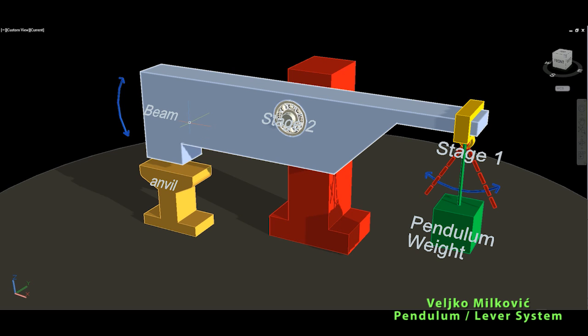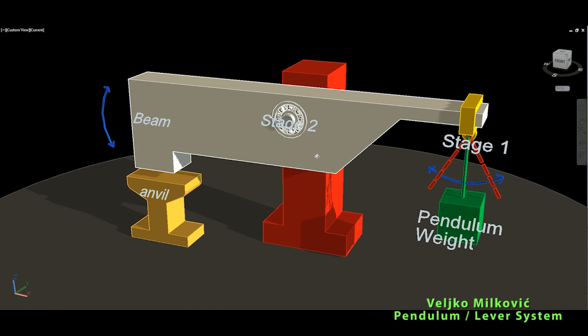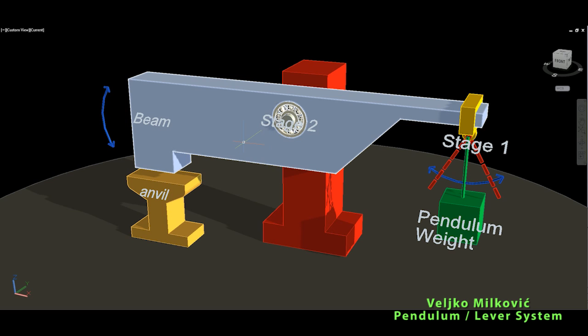So basically, 12 times more force will be pushed on this anvil than the power needed to swing this small pendulum weight on the first stage. Now you can see the image of how this works. This is the idea of the system: it needs 12 times less power to start it than the power we get on the output.